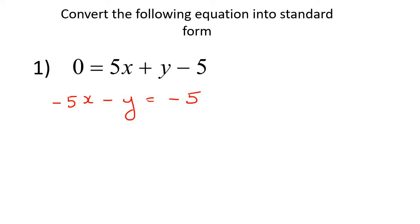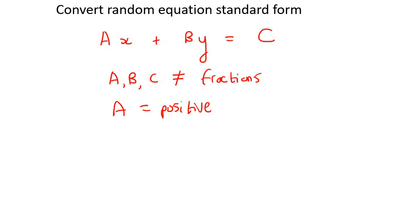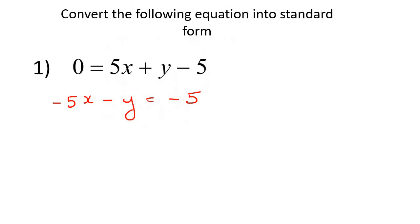Now that's almost standard form, but this value in front of the X is negative, and remember what we just said. A must always be positive. The one with X must always be positive, so what we do is divide everything by negative 1, because what that does is it causes these two negatives to cancel out, so it just becomes positive.